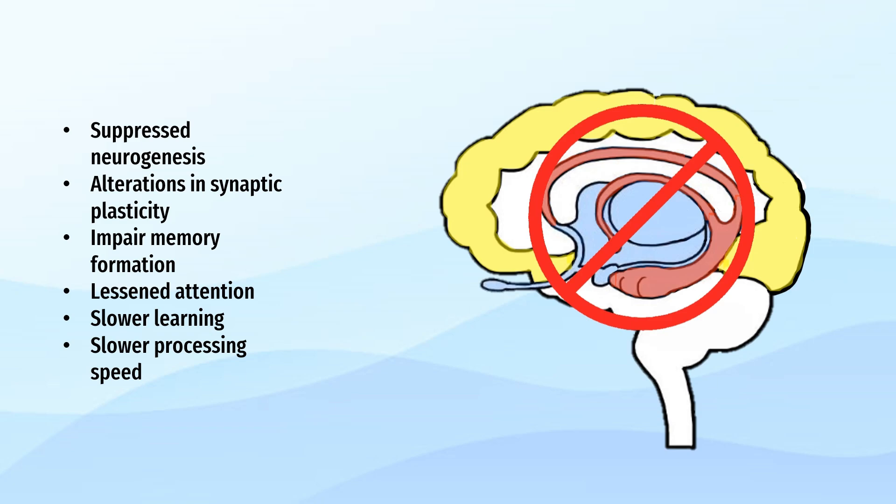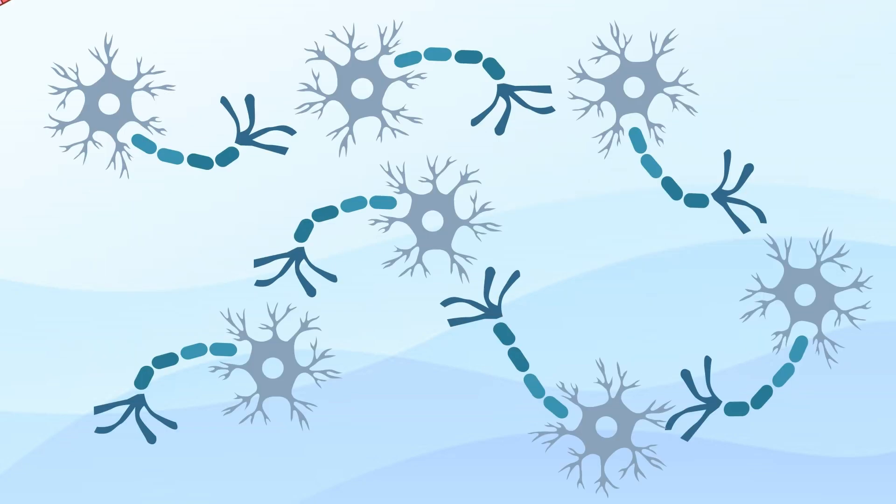These disruptions impair memory formation, attention, learning, and processing speed. However, chemotherapy's impact on the brain extends beyond the structural components, affecting the intricate network of neurons.